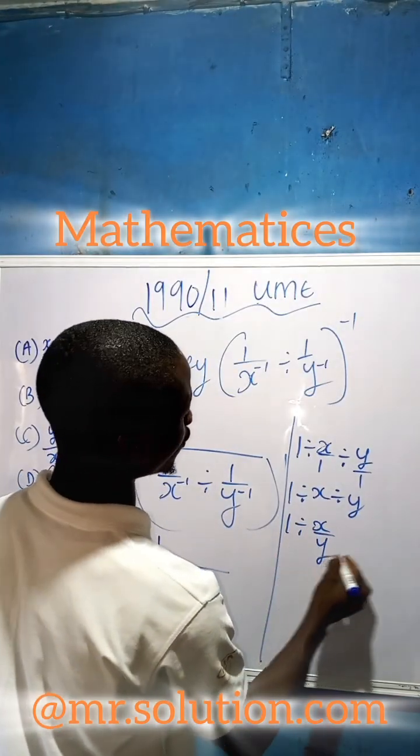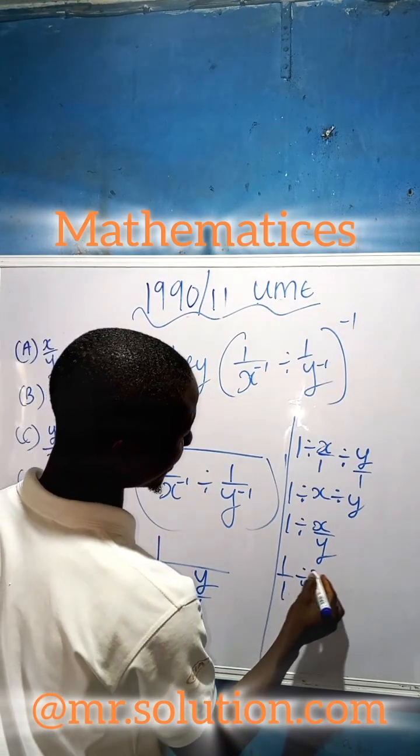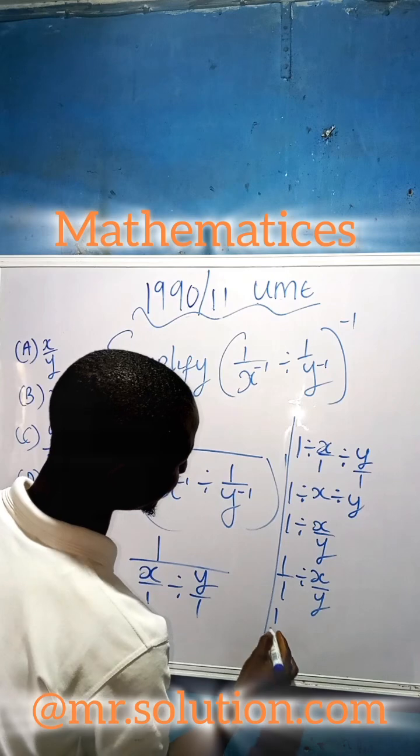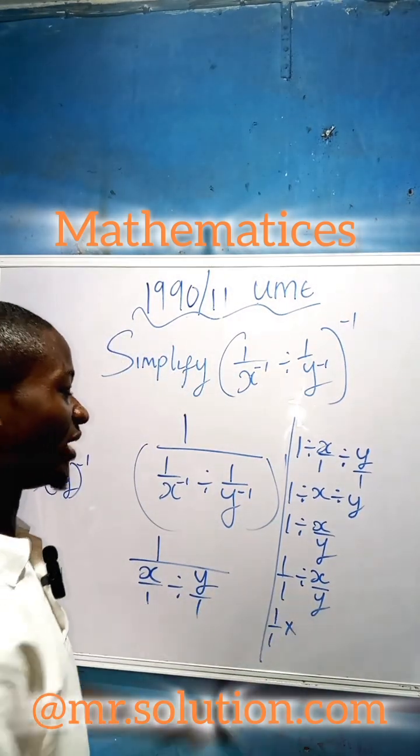Now you can make this to be one over one, divided by x over y, which will give us one divided by one times. Now we are going to use times because whenever you see two fractions with a division sign in the middle...